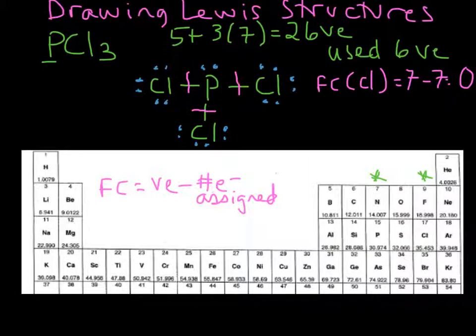Now phosphorus, let's calculate the formal charge for phosphorus. If we look on the periodic table, we see that phosphorus has five valence electrons. It's in group five.